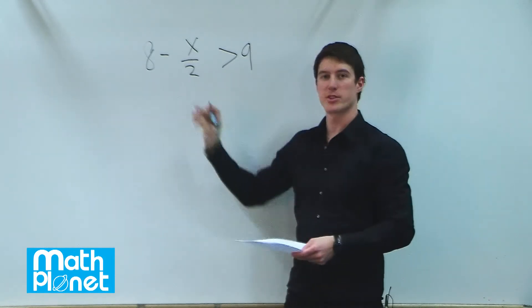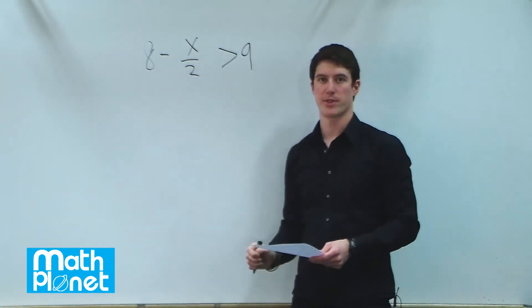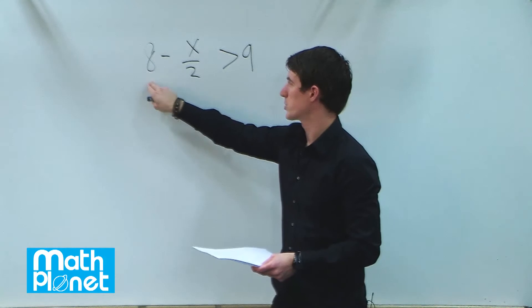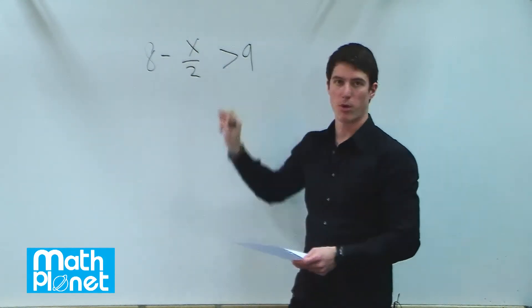We're going to solve this just like we do any algebraic equation, keeping an eye out for multiplication or division by negative numbers. Let's do the first thing that we would normally do, which is subtract 8 from both sides to get the x term all by itself.